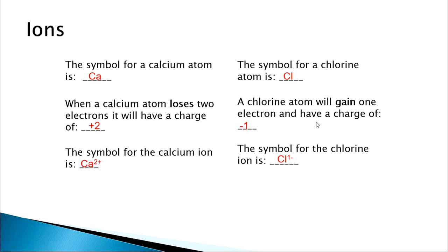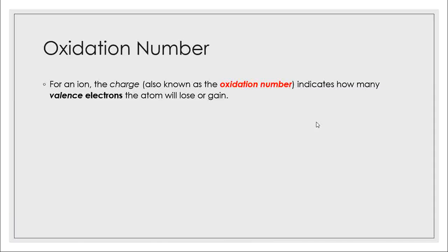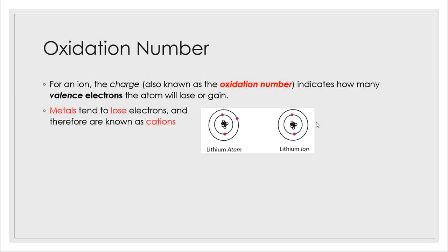In today's video you are going to learn how many electrons an atom will gain or lose and what the charge is for a specific element. The more formal name for charge is oxidation number, and this indicates how many valence electrons the atom will lose or gain. Remember that valence electrons are the outermost electrons — those are the ones that will be lost or gained. Metals tend to lose electrons because they have a low number of valence electrons, which is why metals are known as cations.